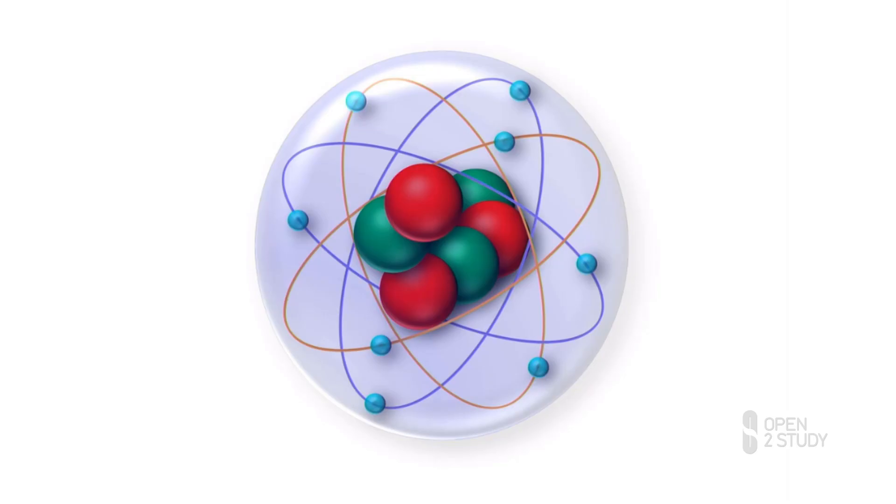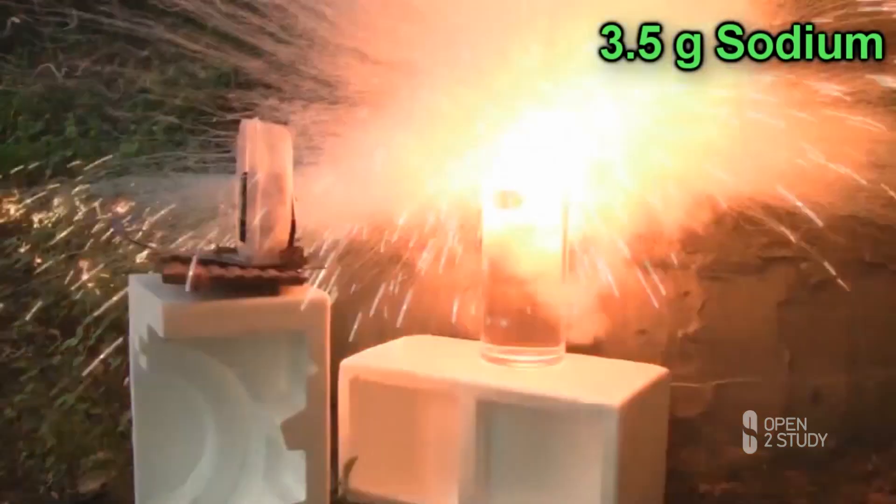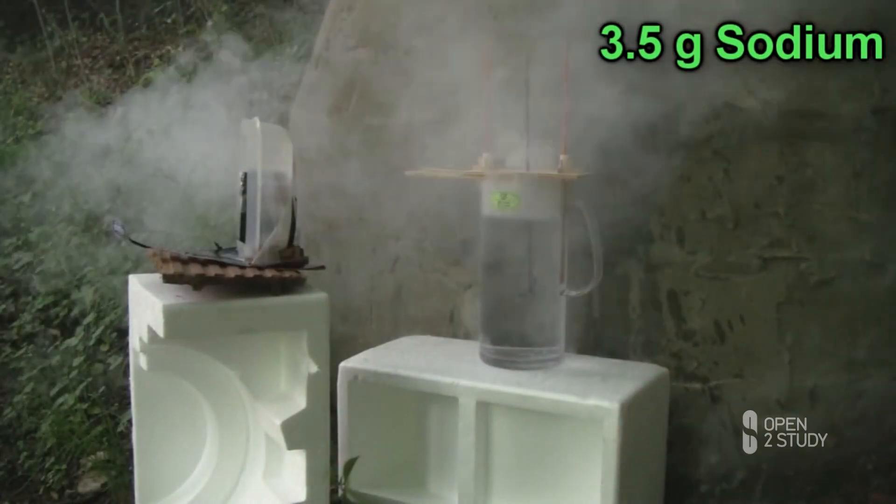In the first module, we're going to start by looking at the building blocks that make up everything around us. We're going to look at atoms, different types of matter that they make, and how we arrange them and communicate to one another as chemists.